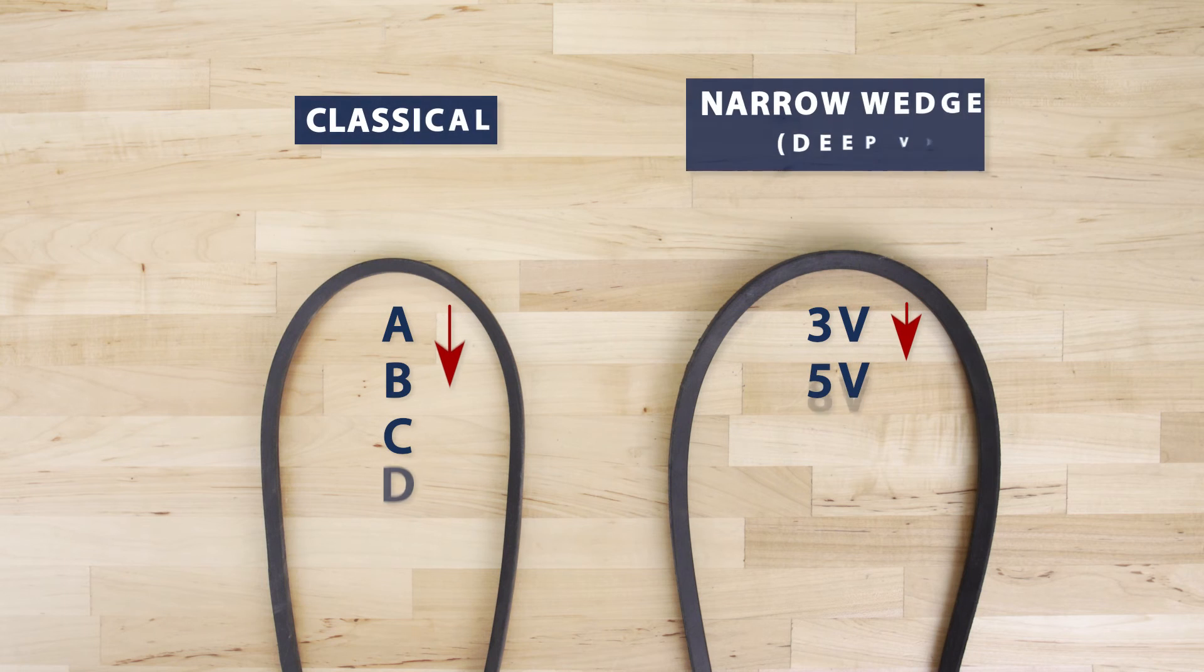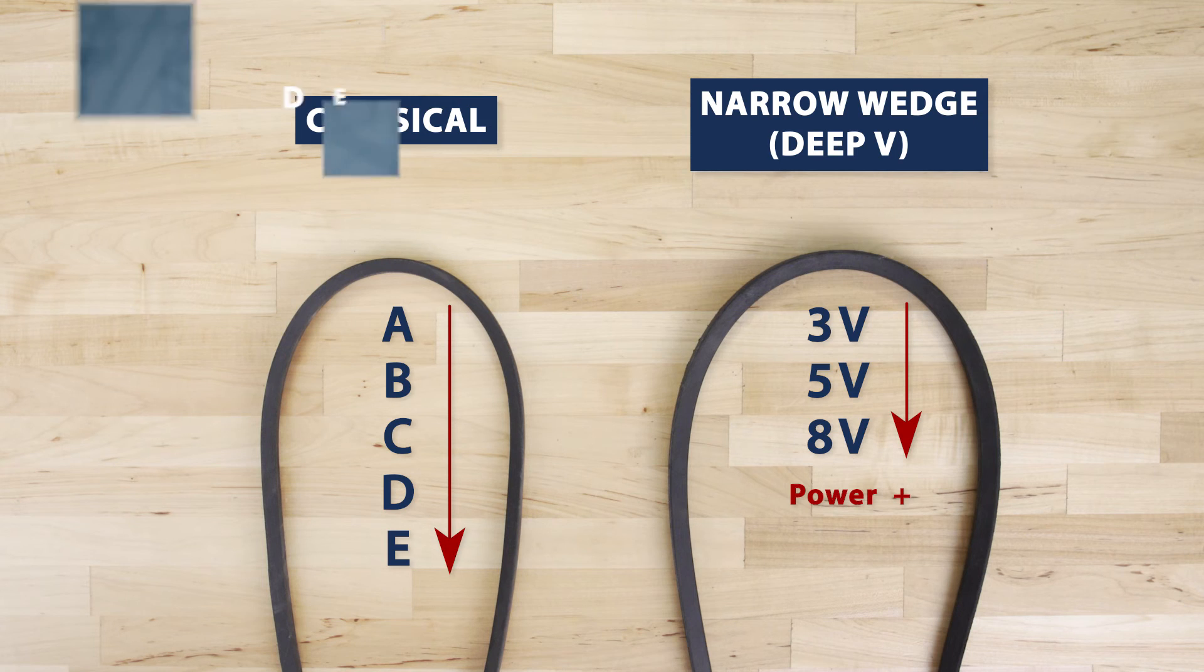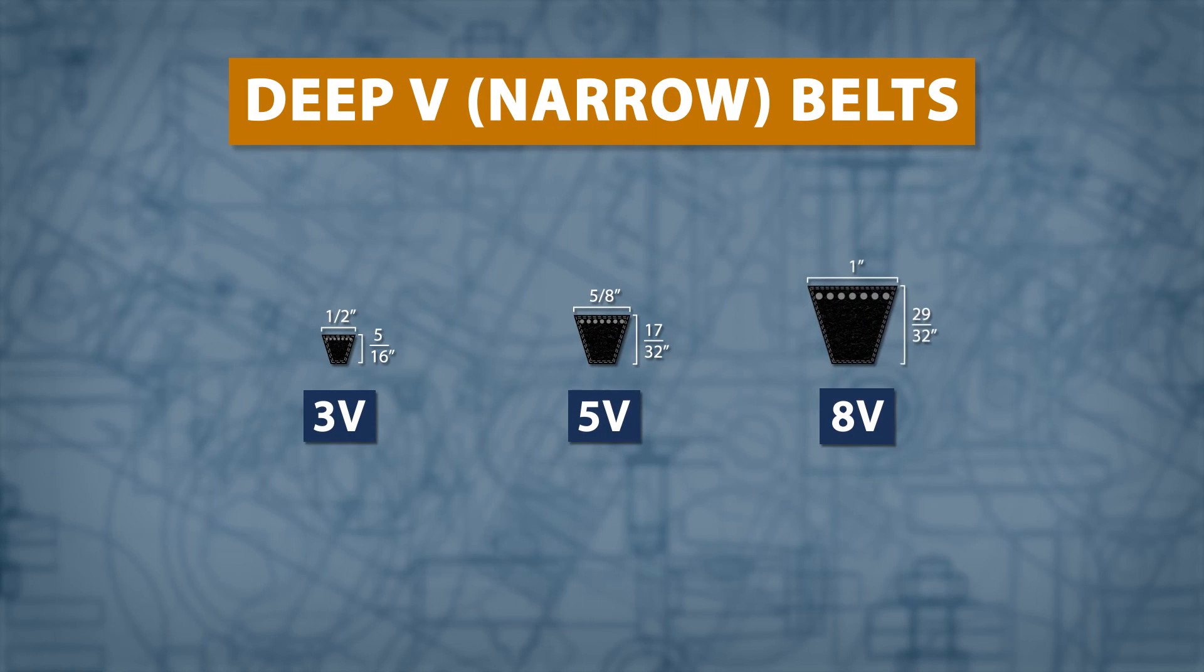Deep V or narrow belts offer higher power ratings for each width when compared to classical belts. This makes them good for compact drives. These belts are identified by the prefixes 3V, 5V, and 8V.